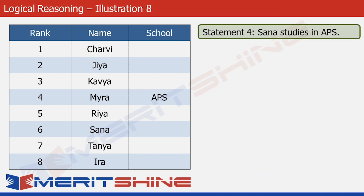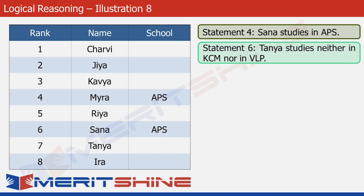Let's look at statement 4, which tells us that Sana studies in APS. So let's put APS in the school cell against Sana's name. The next statement we use is statement 6, which tells us that Tanya studies neither in KCM nor in VLP — in other words, Tanya studies in APS. So let's fill Tanya's school cell with APS.